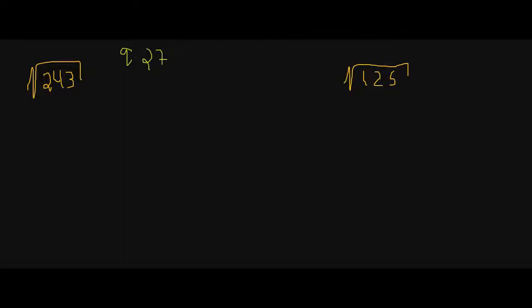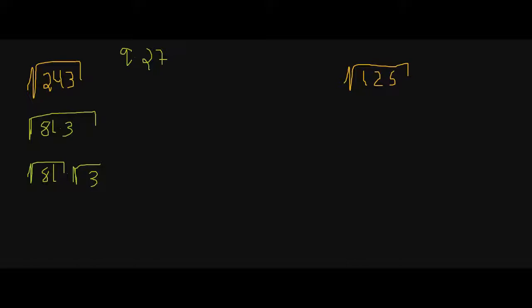So if we go to rewrite this, we get the square root of 81 times 3. We break it up: the square root of 81 times the square root of 3. And the square root of 81 is 9, so our answer is 9 times the square root of 3.